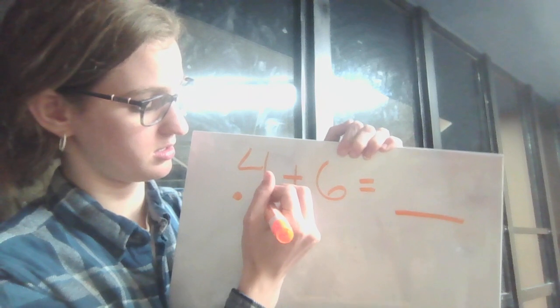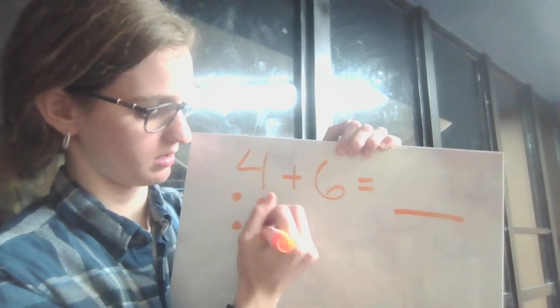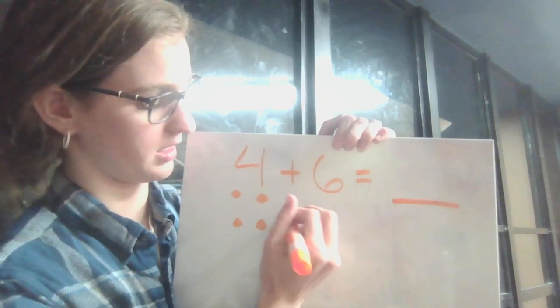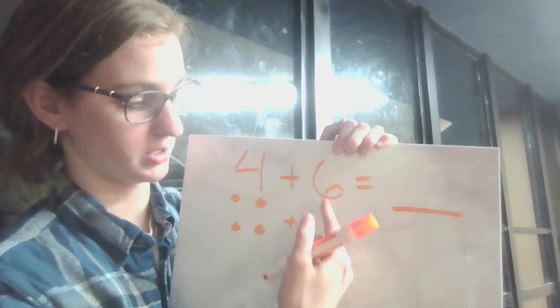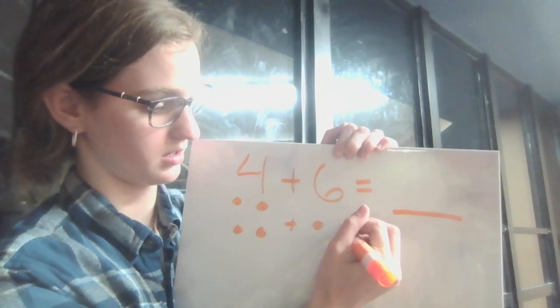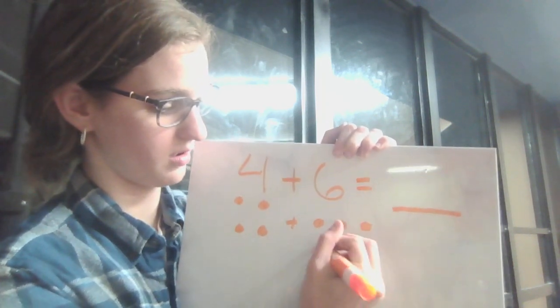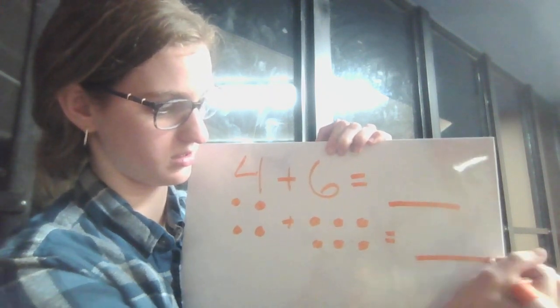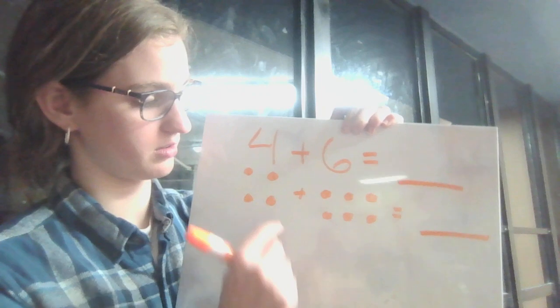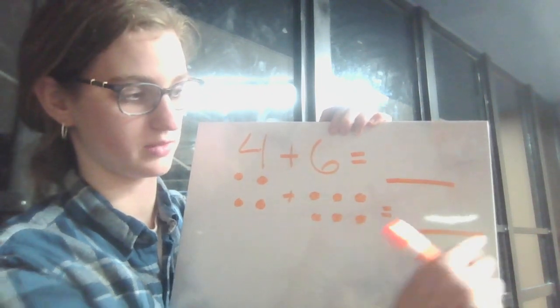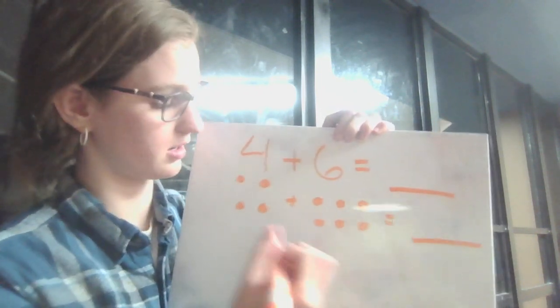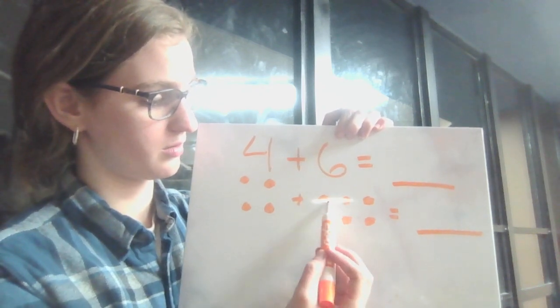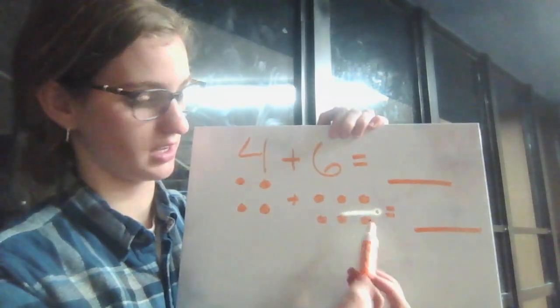Four dots. You go one, two, three, four, and then plus, you want to add six more dots underneath. So, one, two, three, four, five, six, equals blank. So, now you add up the dots, and then that will give you a grand total for both numbers. So, we go one, two, three, four, five, six, seven, eight, nine, ten.